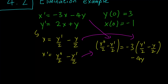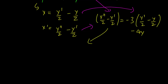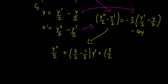We have this equation and we can simplify it into a second order linear homogeneous equation. Collecting terms, we get y double prime over 2 plus 3 halves minus 1 half y prime, minus 3 over 2, plus 4 times y equals 0.